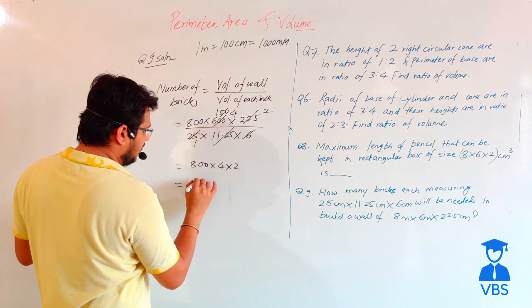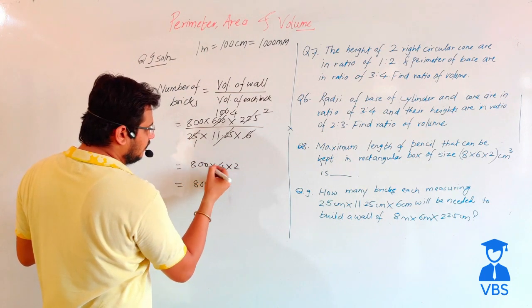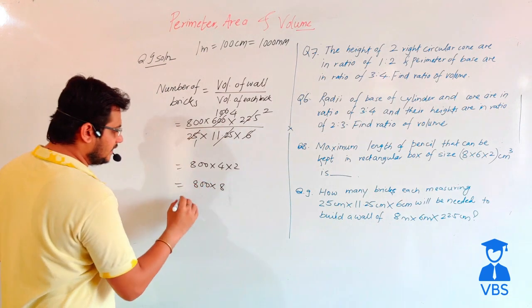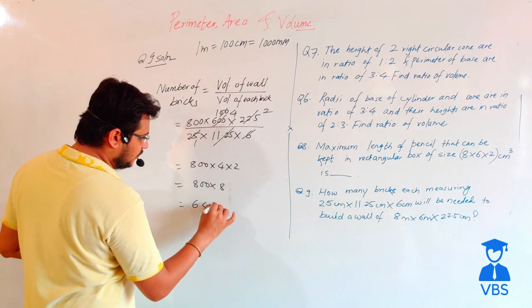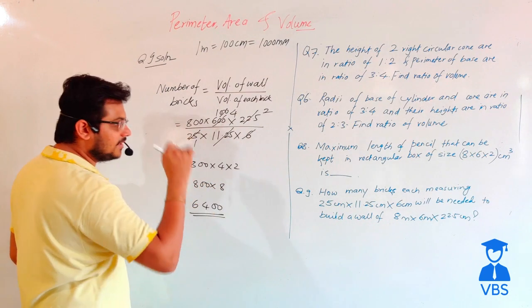Two simple. 800 into 4, two's are 8, eight 8's are 64. This means that this one is going to be 6400 bricks.